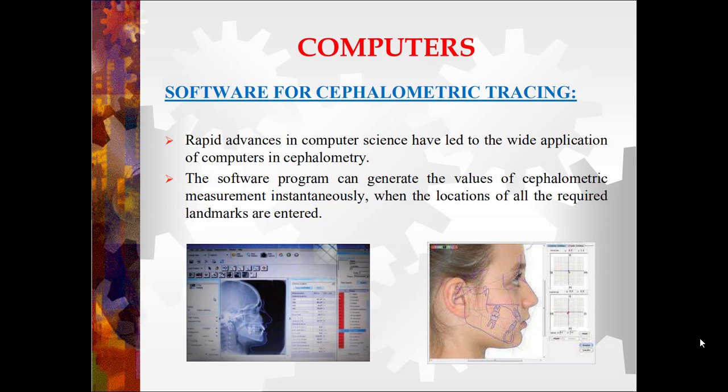Software for cephalometric tracing: rapid advances in computer science have led to wide application of computers in cephalometry. After digitizing the lateral cephalogram, ceph tracing is done with the help of software. For treatment planning, the patient's lateral photograph is superimposed on the lateral cephalogram to check soft tissue changes by virtually distalizing or mesializing anterior or posterior segments. The software gives an image showing whether the patient's profile would become pleasing or worse with the planned tooth movement, allowing us to plan movements that improve the soft tissue relation of the patient.